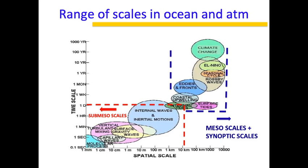On the other hand, the Rossby waves, El Niño, and all those monsoonal cycles have a very large timescale — they exist on the order of a few weeks to months. So this is the basic premise of submesoscale and mesoscales.